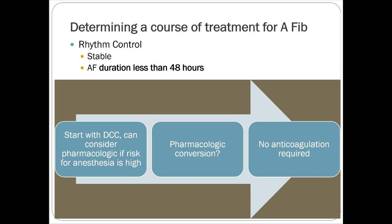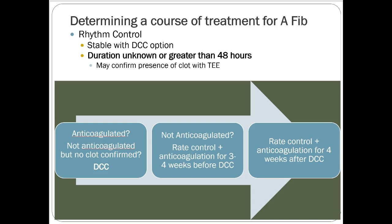For a stable patient whose AFib has been present less than 48 hours, the usual approach is direct current cardioversion — you shock them out. You give propofol as a short-term amnesic agent and cardiovert electrically. Pharmacologic cardioversion with high-dose amiodarone or ibutilide is an alternative. No anticoagulation is required for AFib under 48 hours. If they don't convert with electricity, you'd admit them and start amiodarone — or oral dofetilide as an alternative.